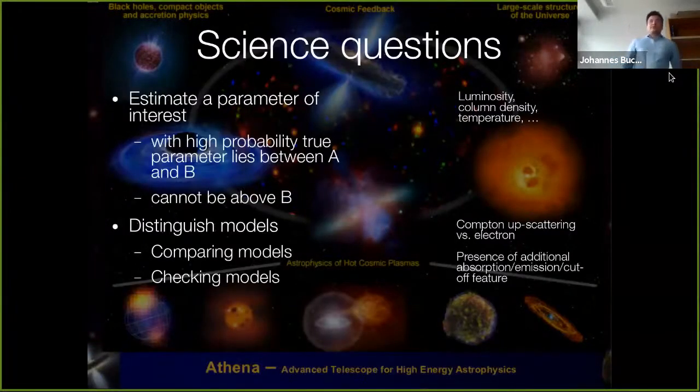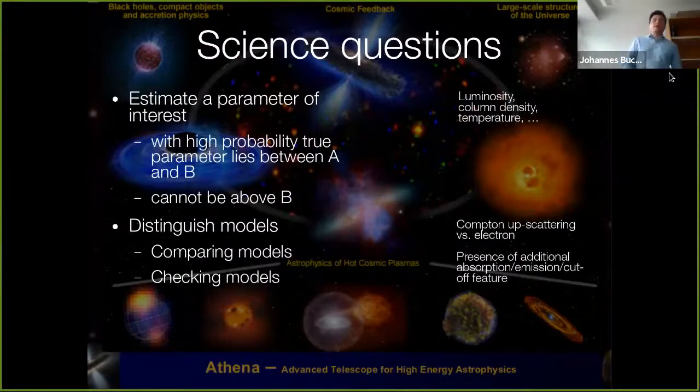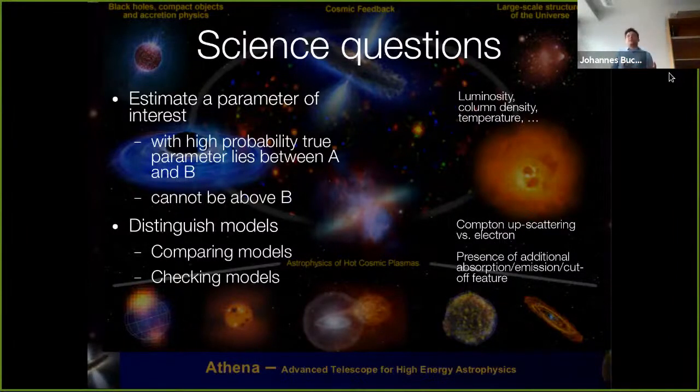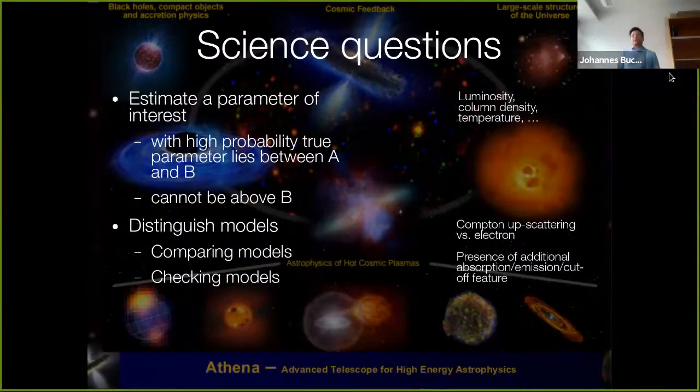The science questions we typically have, I divided them in two categories. For example, you might be interested in some parameter of interest like luminosity, color density, temperature, some parameter of a model. And you want to make a statement that with high probability, the true value out there in the universe lies between A and B. Or you might want to say it cannot be above B, otherwise the data would be very different.